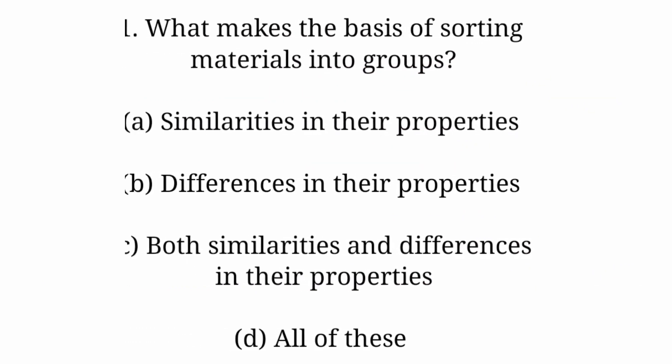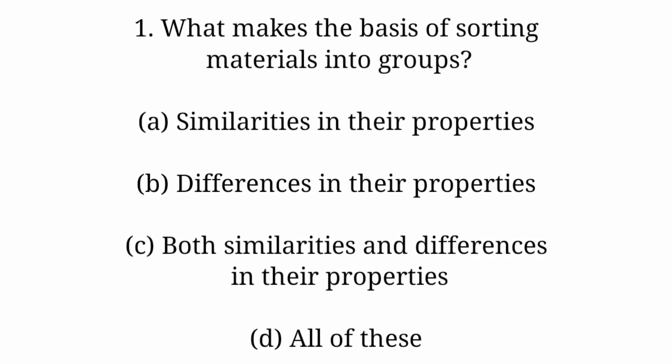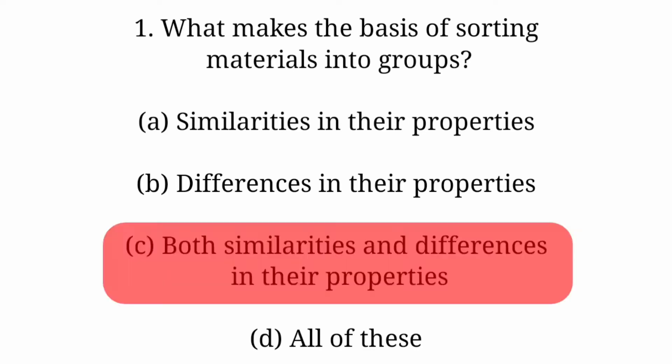Question 1: What makes the basis of sorting materials into groups? Option A: Similarities in their properties. Option B: Differences in their properties. Option C: Both similarities and differences in their properties. Option D: All of these. Answer is Option C: Both similarities and differences in their properties.